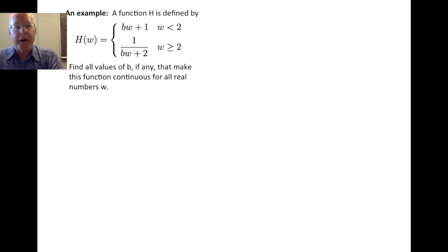So imagine we have a function h defined by the following piecewise definition. h of w is calculated by bw plus 1 if w is less than 2, and 1 over bw plus 2 if w is greater than or equal to 2. Find all values of b, if any, that make this function continuous for all real numbers w.